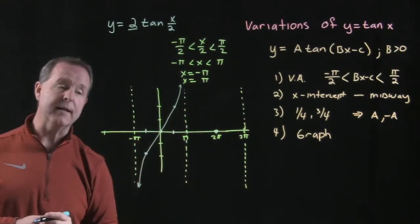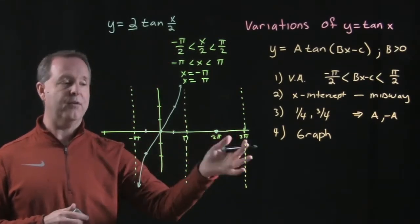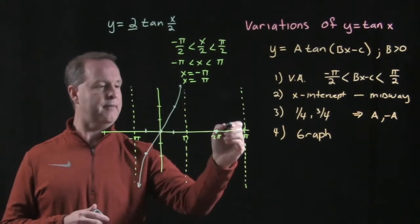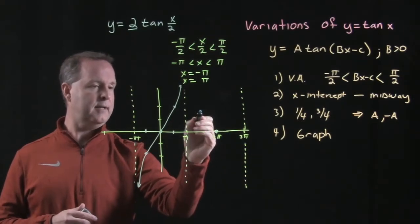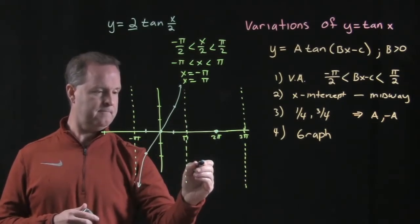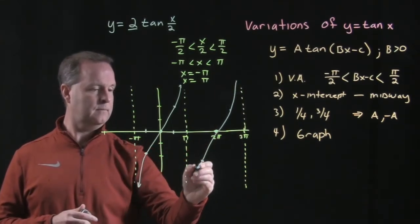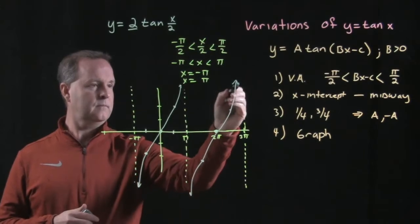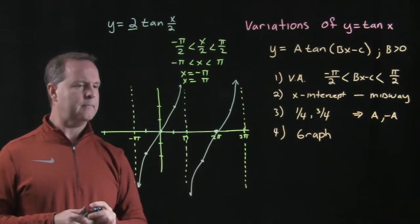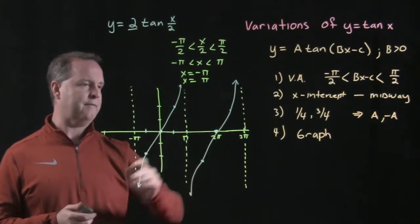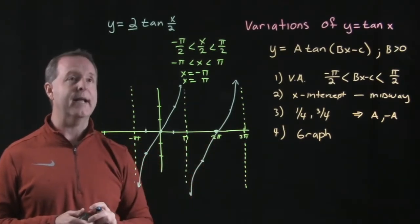Then from there we develop a smooth curve that fits these characteristics, and that's one period of this particular graph. If I wanted to graph another repetition, it follows the same idea: one-fourth of the way between the next two asymptotes, I have a value of negative 2; three-fourths of the way, I have a value of positive 2. Notice my asymptotes do not let the graph cross over. This repeats continuously to the right and to the left.